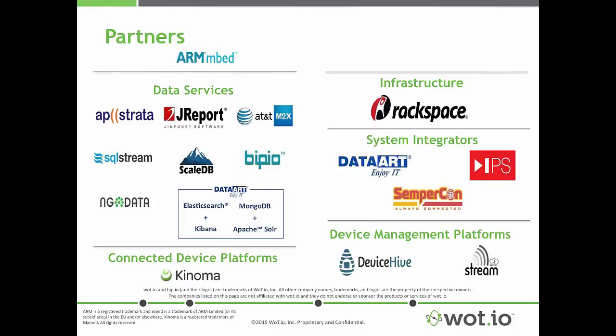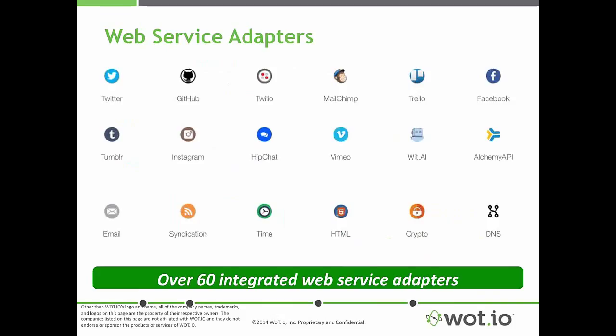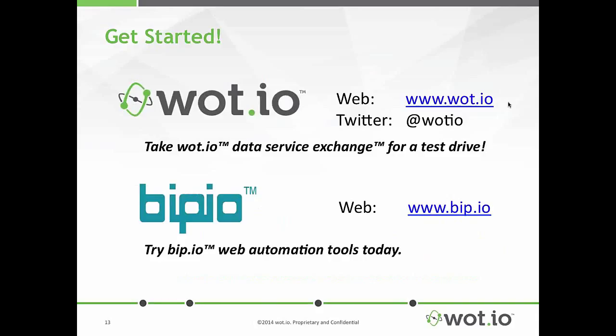In addition to providing many choices around enhancing data, Wadio also provides openness and choice with interacting with over 60 web applications such as Twitter, email, Twilio, MailChimp, and many others. With Wadio's user interface, you can rapidly create workflows with the cloud components you love, and no programming is required. You can get started with Wadio today — check out our website at WOT.IO and take our data service exchange for a test drive. Just go to Get Started and the Ship IoT tab. You can also get started with Bipio, which is a range of web automation tools, at the website VIP.io. Back to you, Dean.